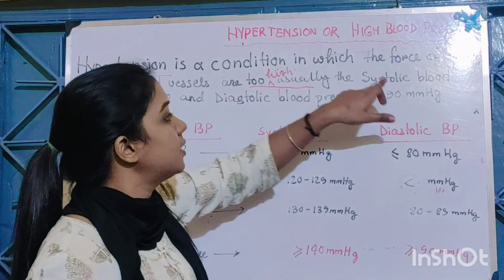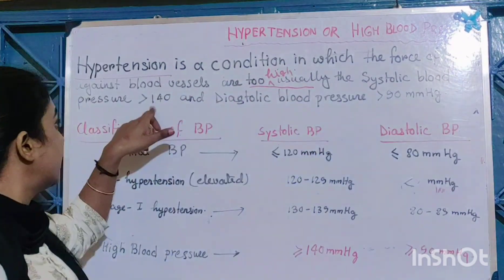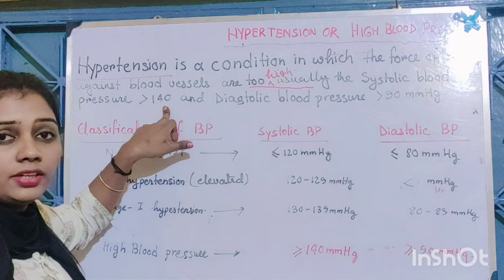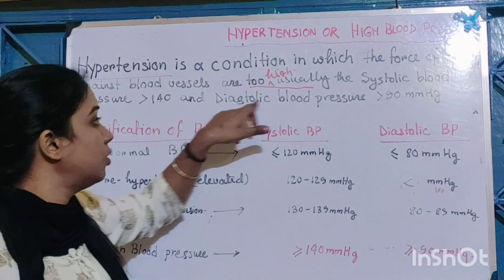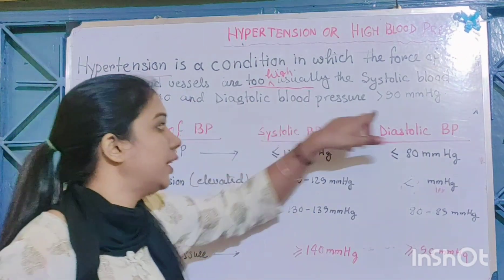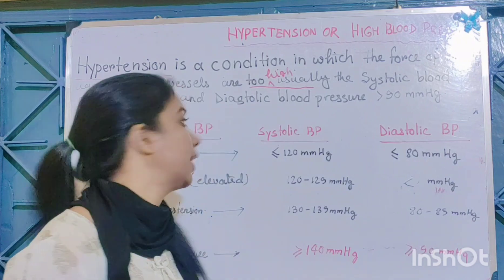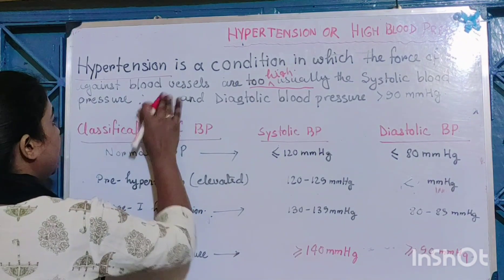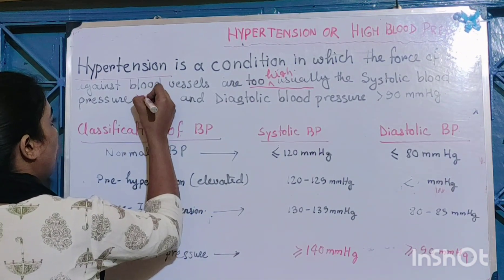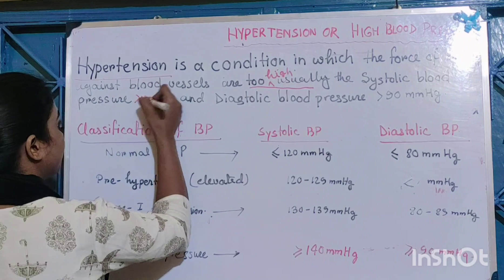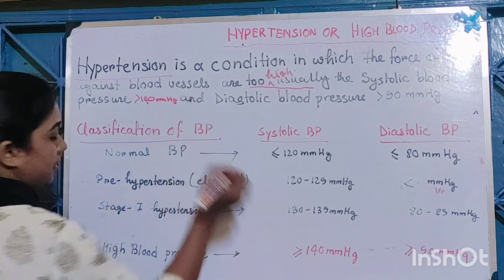Usually, in hypertension the systolic blood pressure becomes greater than 140 mmHg and diastolic blood pressure becomes greater than 90 mmHg. This is the definition of hypertension.